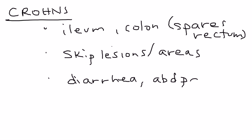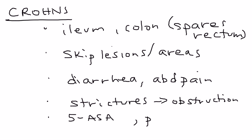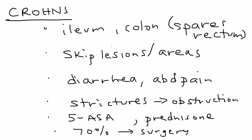The symptoms involve abdominal pain and diarrhea. Complications include strictures which can lead to obstruction. Treatment involves the 5-ASA drug, also known as mesalamine, or prednisone for flare-ups. Approximately 70% of patients will need some form of surgical resection.